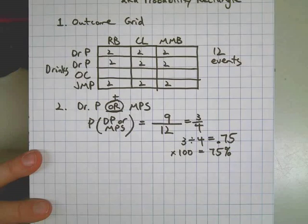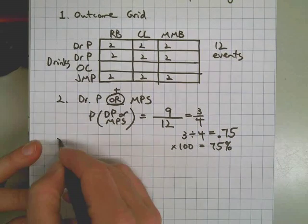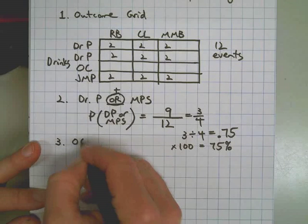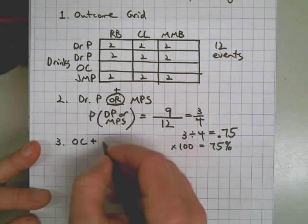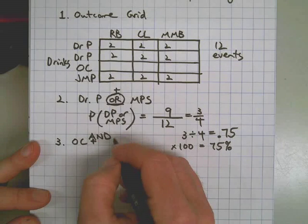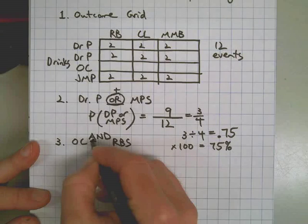Move this up, I'll keep the outcome grid in the picture. Go to question three. We want Orange Crush and Roast Beef Slab. I'm going to take the addition sign out of there.